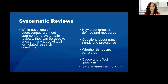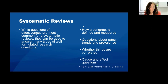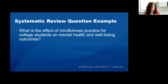While often we are looking at questions of effectiveness, systematic reviews can be used to answer other types of research questions, such as how a construct is defined and measured, questions about rates, trends, and prevalence, whether things are correlated, and cause-and-effect questions. A specific example would be: what is the effect of mindfulness practice for college students on mental health and well-being outcomes?